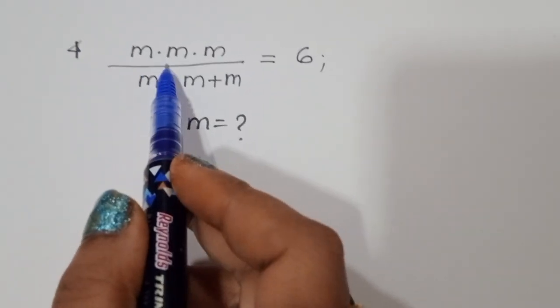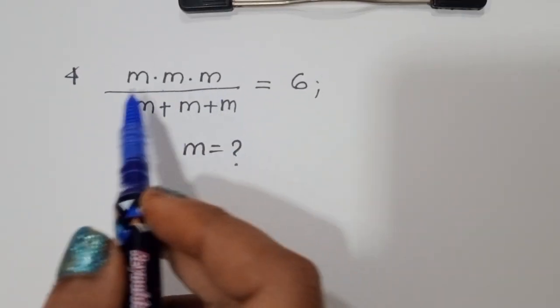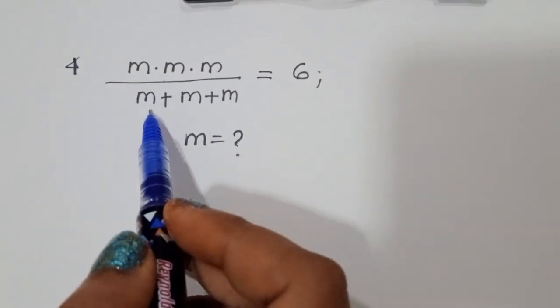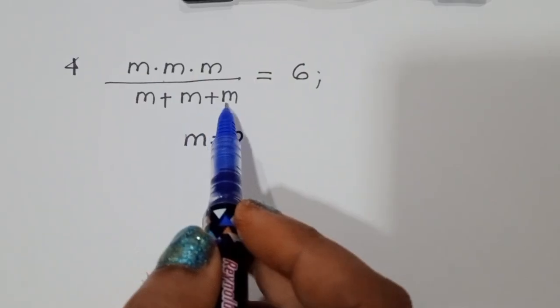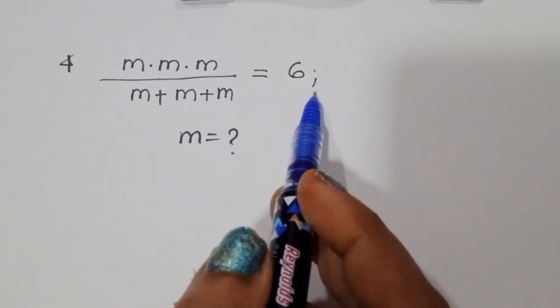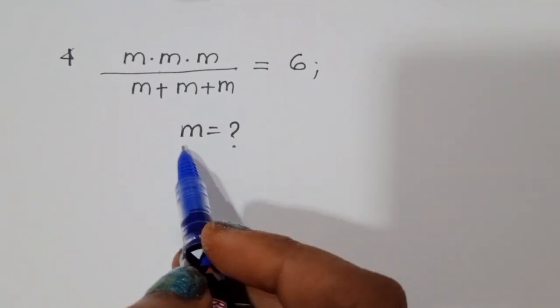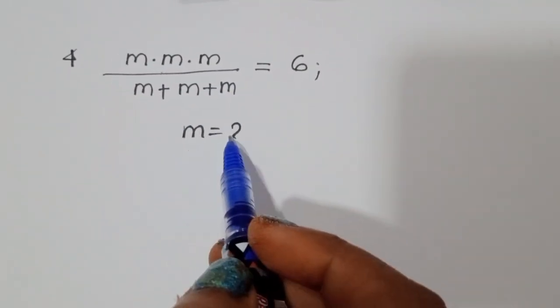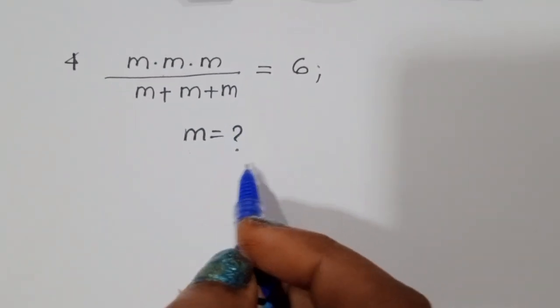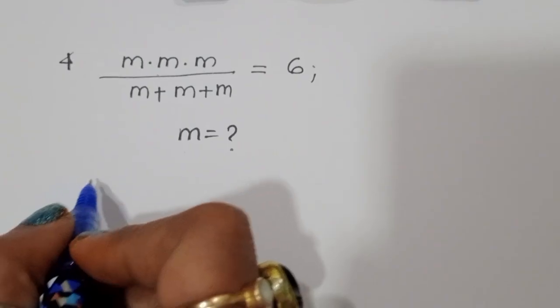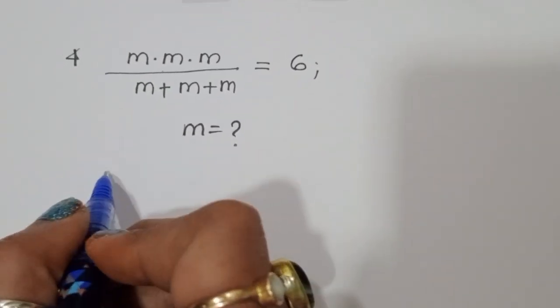The question is: m times m times m divided by m plus m plus m is equal to 6. We have to find out the value of m in this question.